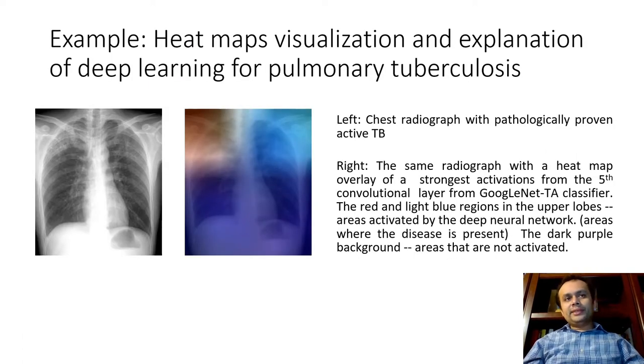To illustrate further, here's an example that a lot of us may already be familiar with, the use of deep learning in radiology. So the images that you're seeing on the left is that of a chest radiogram with a pathologically proven case of tuberculosis. The one on the right, same radiograph, but the output is overlaid with the result of a 5th convolutional layer from a GoogleNet TA classifier. So the color red and light regions that we are seeing on the upper lobes, these are the areas which are activated by the deep neural network. So if these correspond to the particular condition, then to the domain expert, that would be an indication of the problem.